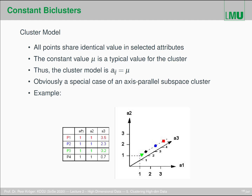This is obviously a special case of axis-parallel subspace clusters. For example, this sub-matrix involves all four points but only the first two attributes A1 and A2 — A3 is not part of this sub-matrix. In this subspace spanned by A1 and A2, all points are identical. They may spread in non-relevant attributes like A3, but if you project them onto the A1-A2 plane, they are all exactly the same value.